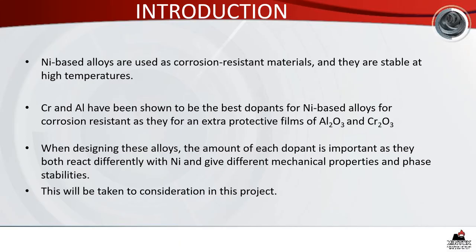High pressures and high temperatures in the petrochemical industries tend to lead to corrosions, and as such there is a need for new corrosion resistant materials. Nickel-based alloys are known to be good corrosion resistant at high temperatures, and will be investigated in this project. Chromium and aluminium are normally used as dopants in nickel-based alloys because of the extra protective films they provide.